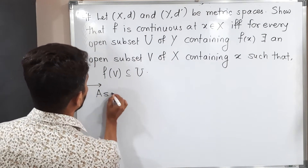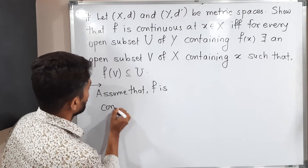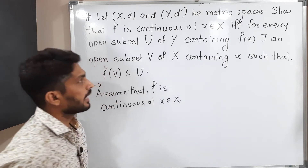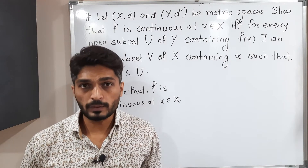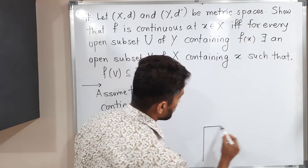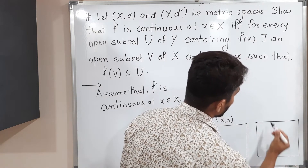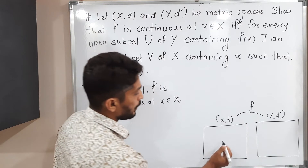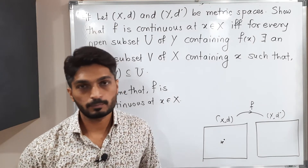First, assume that f is continuous at x, where x belongs to X. I will draw a diagram to help understand. We have two metric spaces: (X, d) and (Y, d'). f is a function from X to Y. There is one point x in X, and we have assumed that f is continuous at this point x.